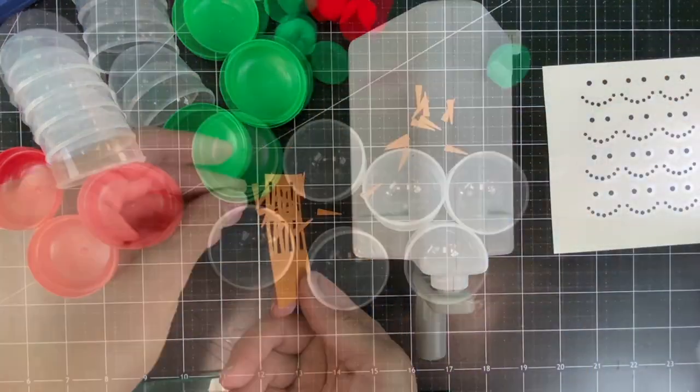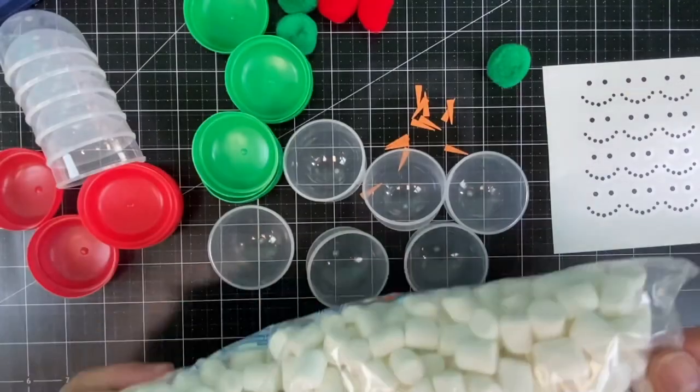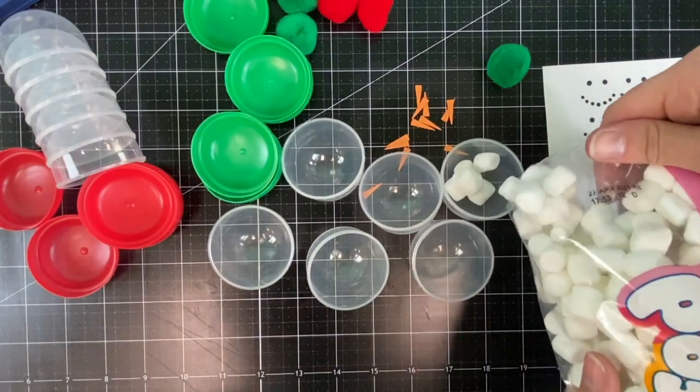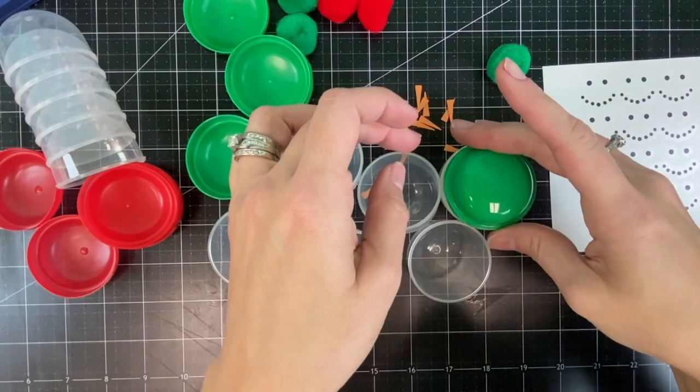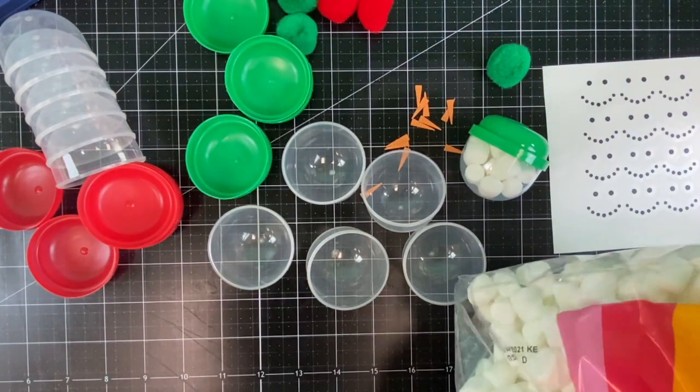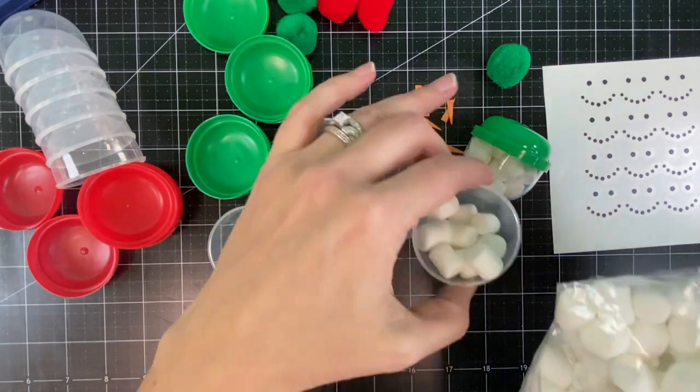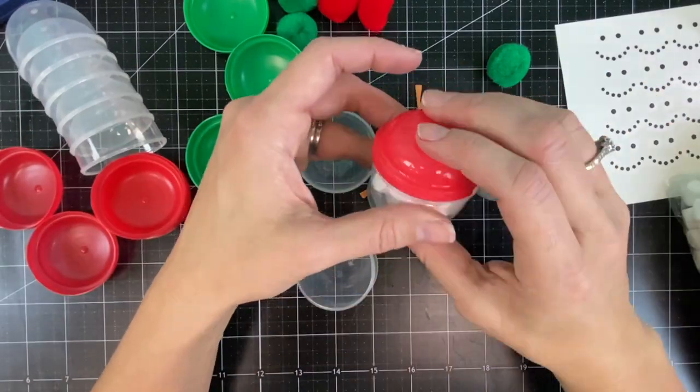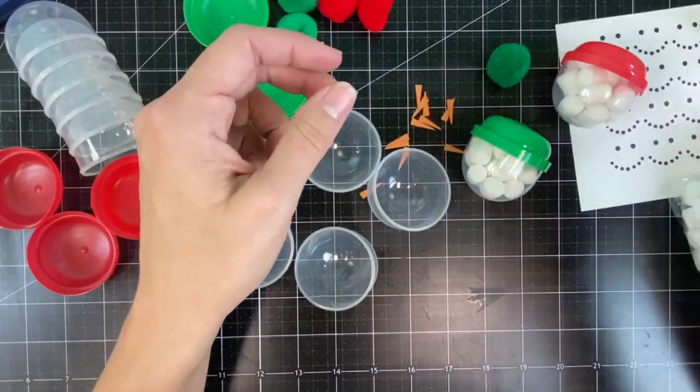Now that we have all the pieces ready to go we can begin assembling the candy capsules. I suggest adding your candy or treat or gift whatever you're going to place inside before you begin decorating. That way you can make sure you get the face decal exactly where you want it with the lid already in place.